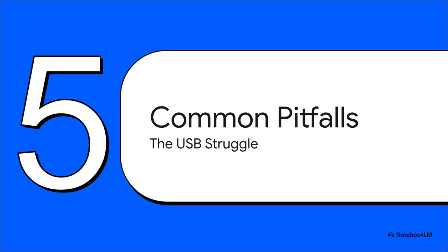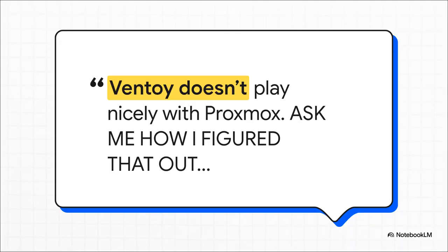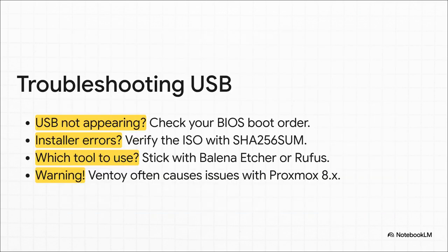No matter which path you choose, there's one hurdle that trips up almost everybody: just getting the machine to boot from the USB installer in the first place. You think you did everything right, but you used the wrong tool to make your USB drive, and now you've wasted an entire day staring at a black screen. Here's your quick troubleshooting checklist: if the USB drive doesn't even show up as an option, dive into your BIOS and check the boot order. If the installer starts but fails with weird errors, your download might have been corrupted — always verify it. For the tool to make the USB, just stick with the classics: Balena Etcher or Rufus. They just work. Ventoy, as cool as it is for other things, is known to cause major headaches with Proxmox.